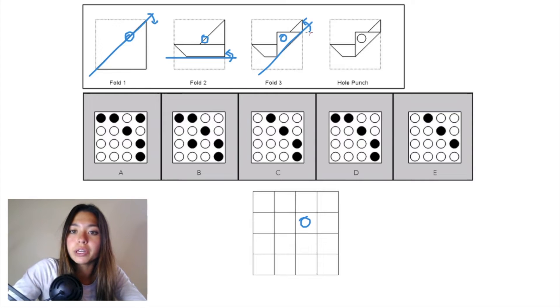Now we'll work backwards. When we undo fold 3, the piece of paper that was initially folded up was this triangular piece. Since it includes that one blue hole punch,